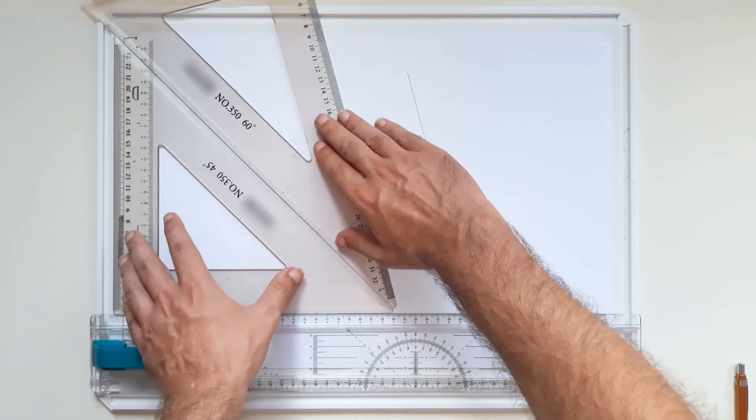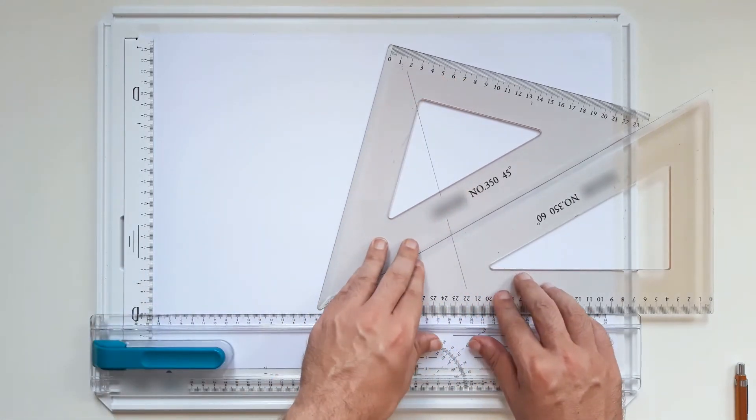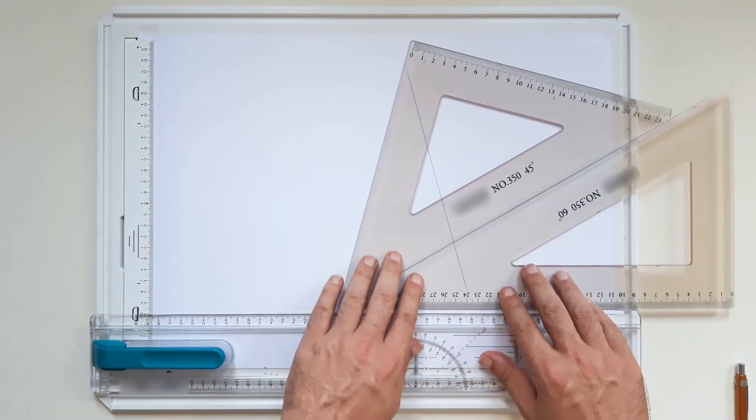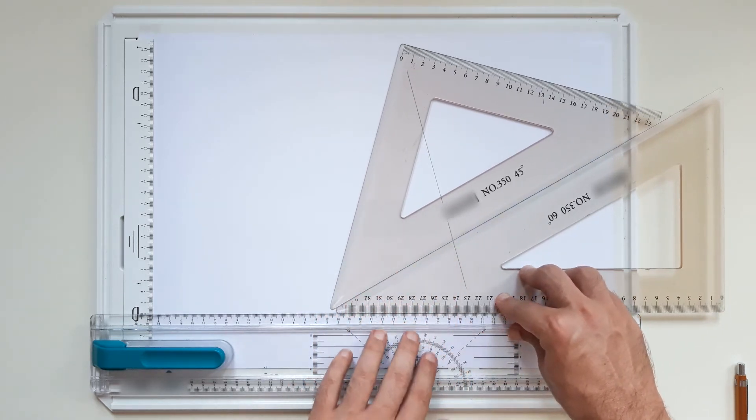And we can do it also by rotating the set squares like so. Make sure they are sliding over the sliding rule.